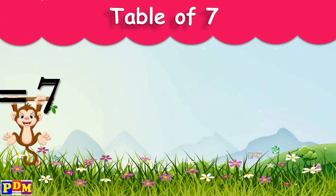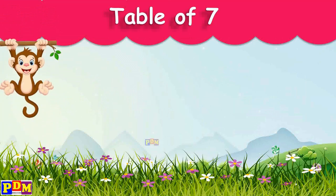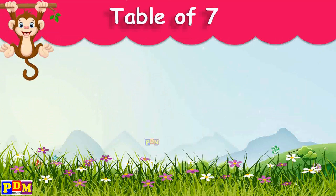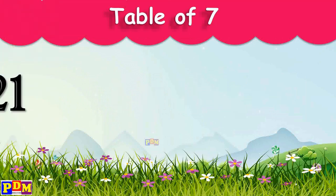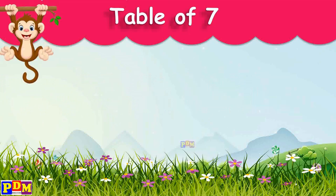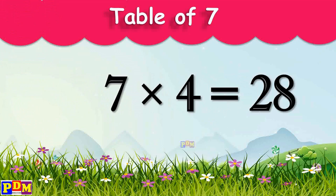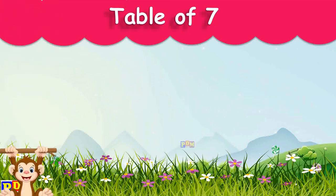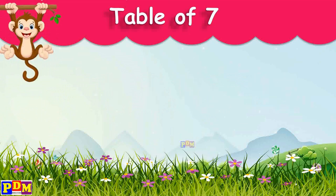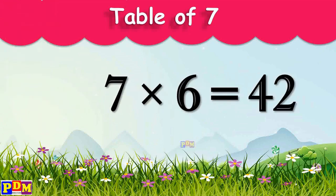7 1's are 7. 7 2's are 14. 7 3's are 21. 7 4's are 28. 7 5's are 35. 7 6's are 42.